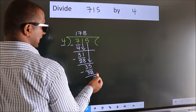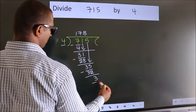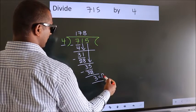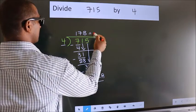No more numbers to bring it down. So we stop here. This is our remainder. This is our quotient.